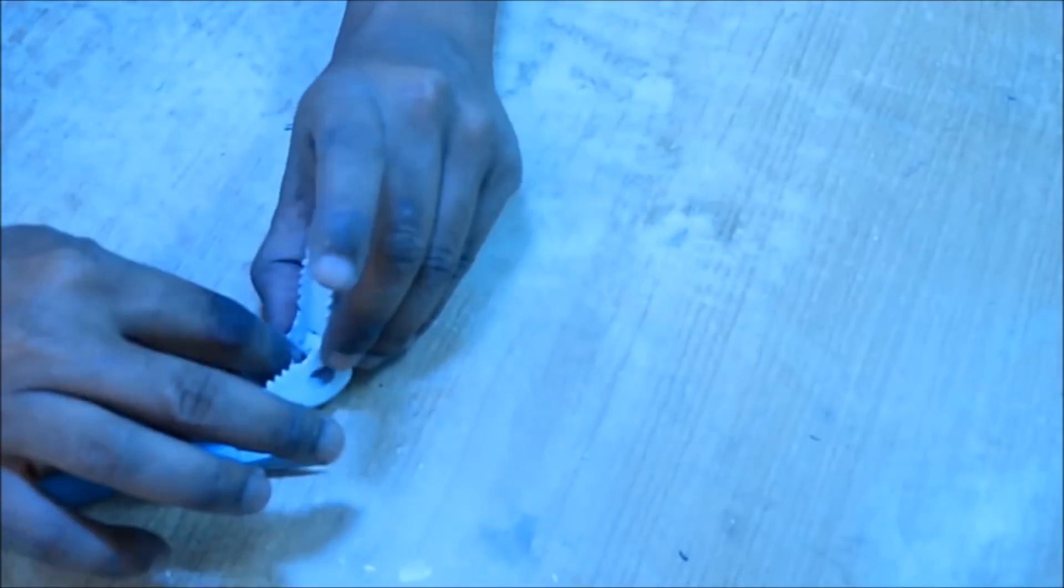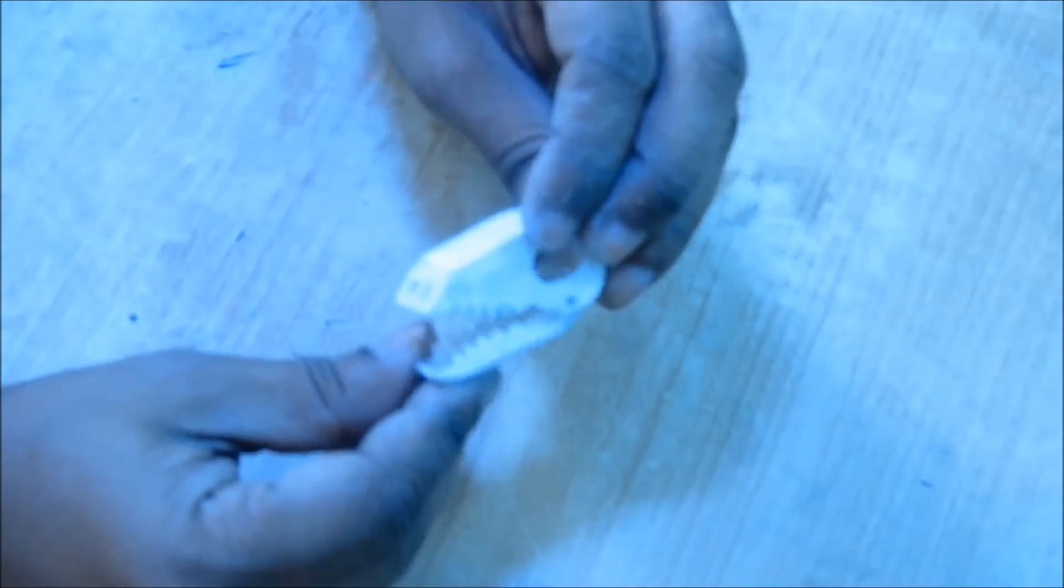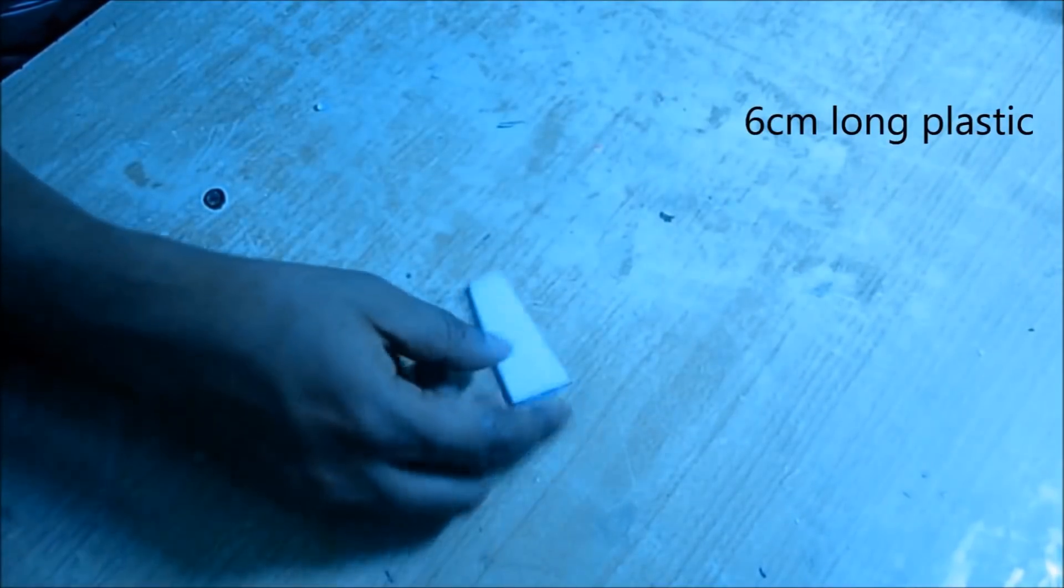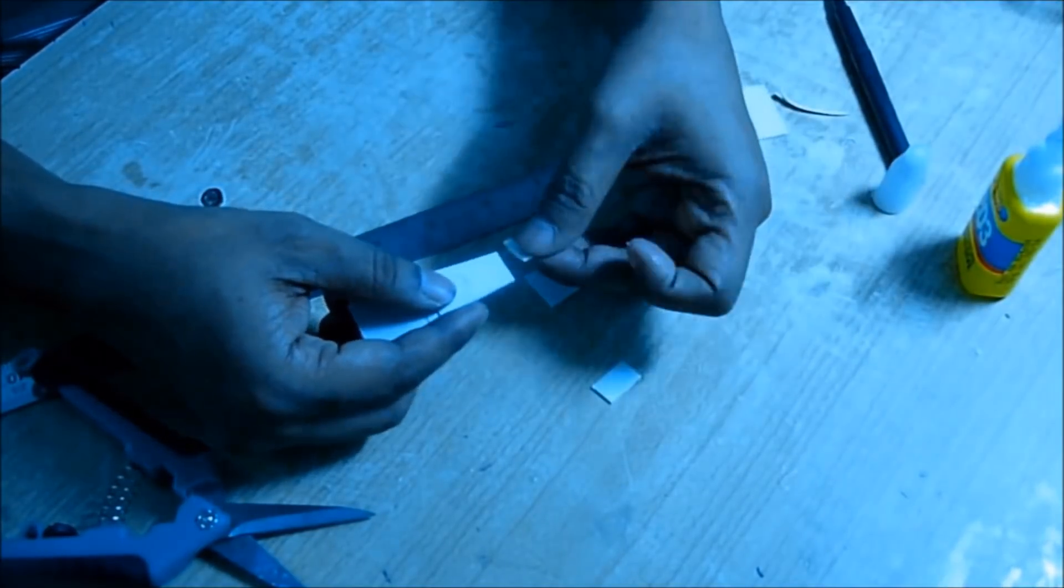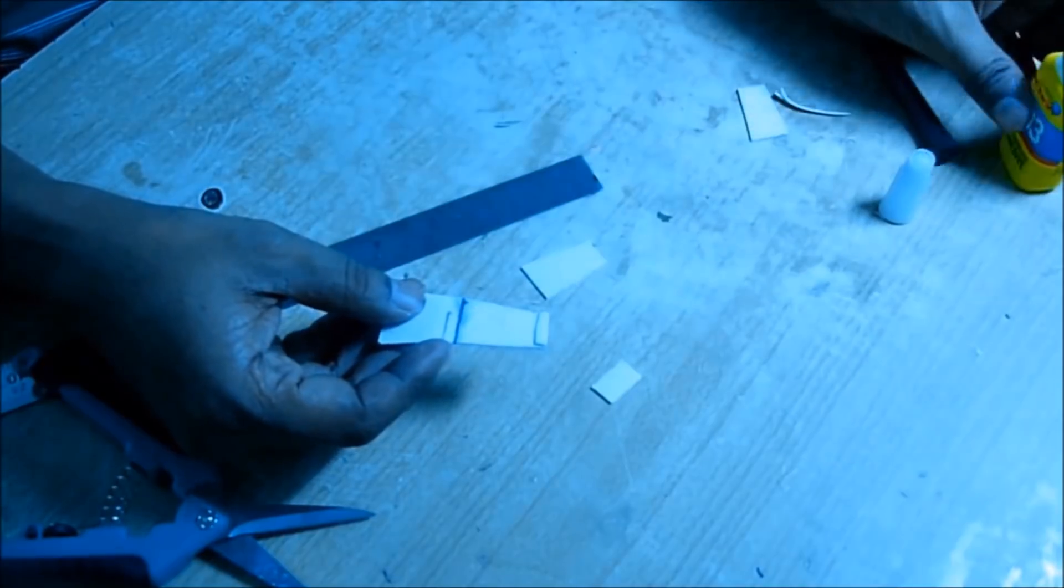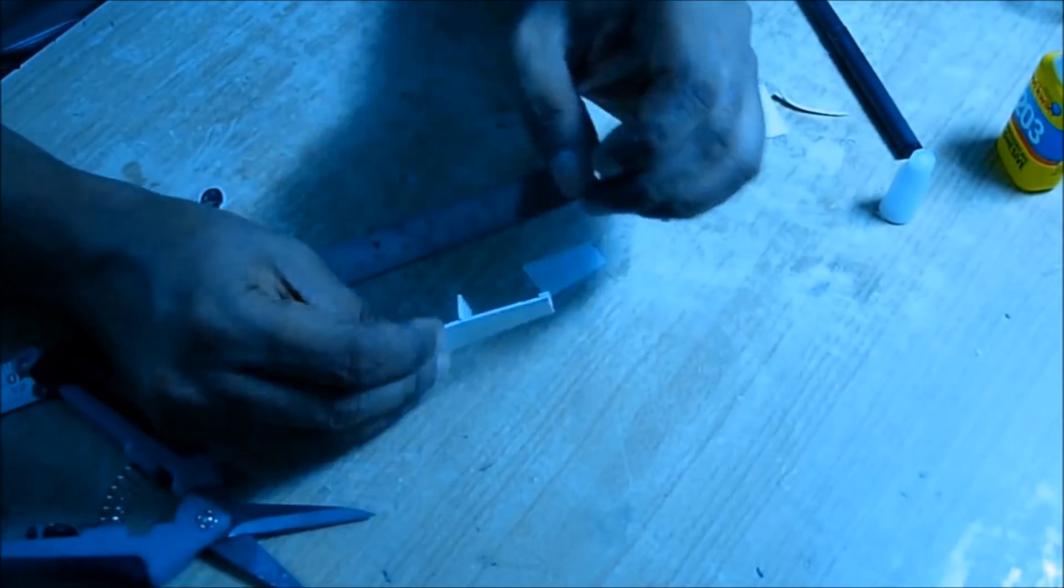Like that, the head part is ready. Now we will take 60mm long plastic and glue some small pieces of plastics with this part to make the neck part. First make the structure like this.